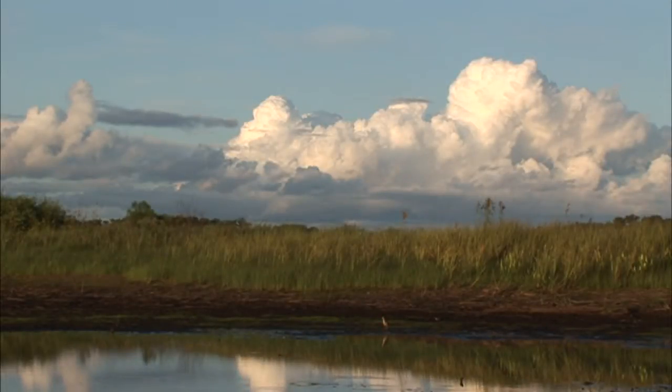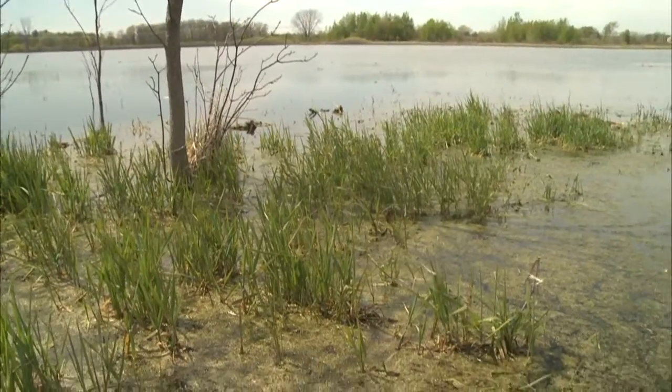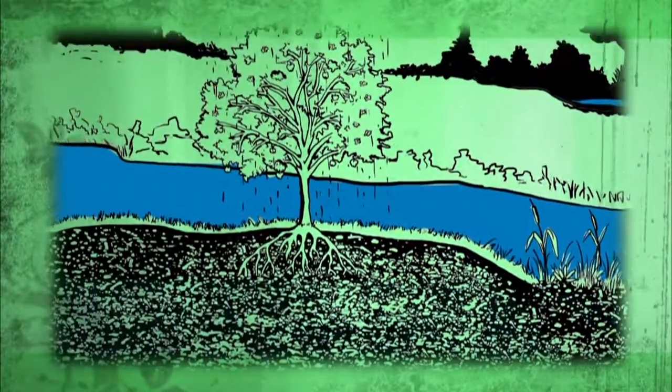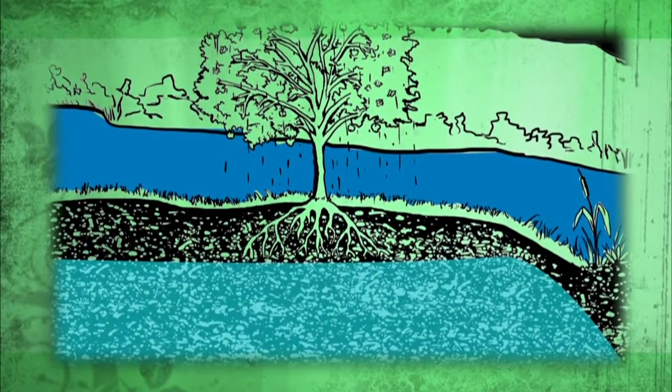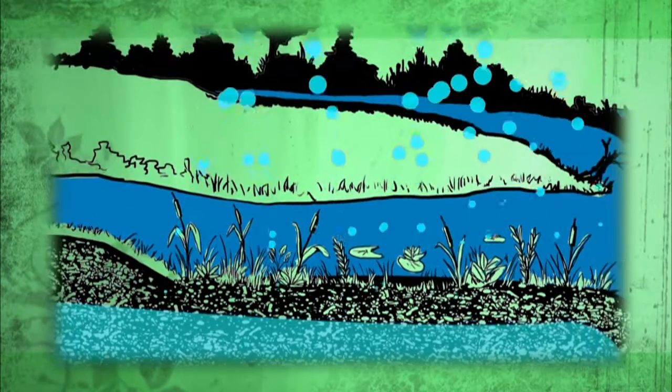Wetlands also protect against erosion by acting as shallow water buffers, with vegetation between deeper waters and shorelines. And finally, wetlands often link groundwaters with the surface, where sunlight and evaporation can return water vapor to the atmosphere.